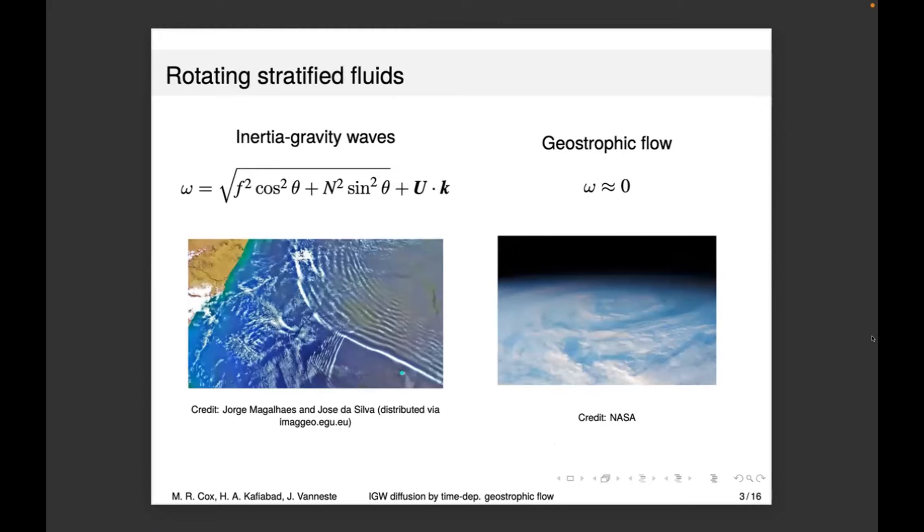You've probably all known this already, but we've got a rotating stratified fluid that can be decomposed into inertial gravity waves and geostrophic flow. Our inertial gravity waves are, in the region we're considering, much shorter wavelength than the flow and much quicker. They have a dispersion relation given by omega, where f is the Coriolis frequency, n is the buoyancy frequency, and theta is the angle with the vertical. The bit under the square root is the intrinsic frequency, and the u dot k part is the Doppler shift term induced by the flow.